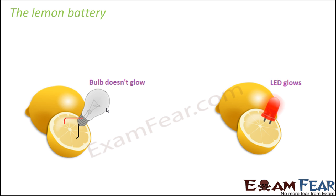What is the lemon battery? We all know that cells can be used as a source of electric current, but did you ever know that lemons can also be used as a source of electric current? Take a bulb, attach two wires to the positive and negative terminals, and dip them inside the lemon. You can also take an LED — it has two lengths, one longer and one shorter, representing the positive and negative terminals — and insert it inside the lemon.